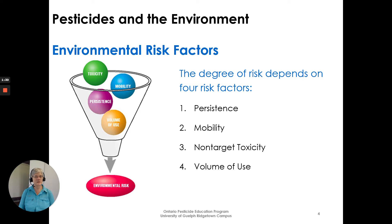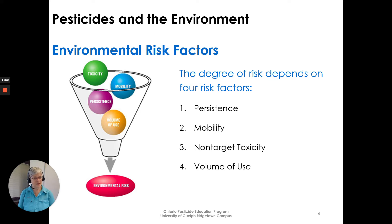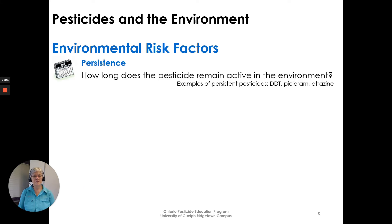Environmental risk factors can be shown in this way. The degree of risk will depend on four risk factors: how persistent is that pesticide; mobility — what's its ability to move around in the environment; non-target toxicity — you may be having a toxicity against something you don't intend to use that pesticide on, such as a non-target insect or plant; and number four, the volume of use. The more we use something, the more that gets out in the environment, and the higher the environmental risk.